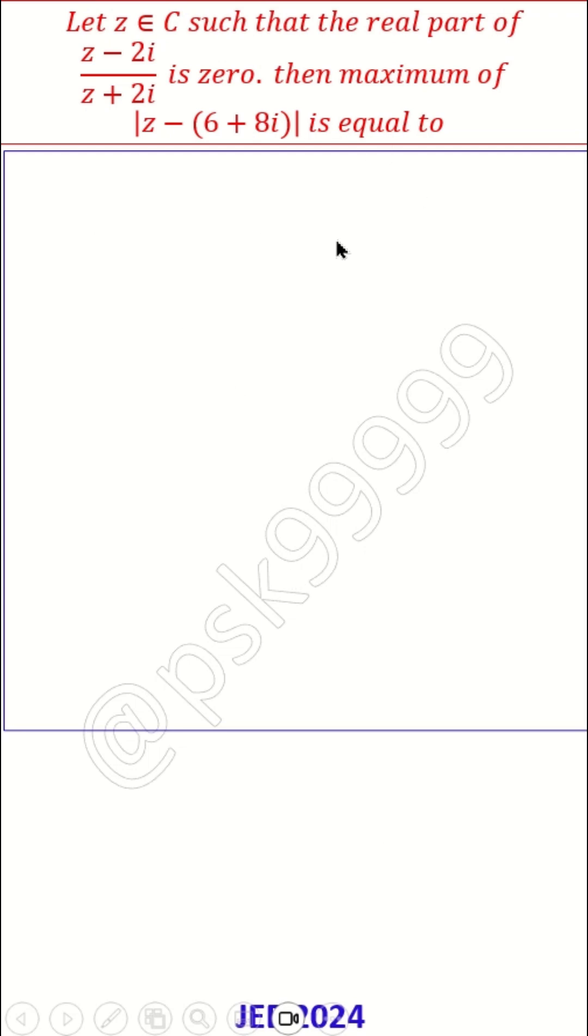Let z belong to complex numbers such that the real part of (z-2i)/(z+2i) is zero. Then the maximum of |z-(6+8i)| is equal to what?